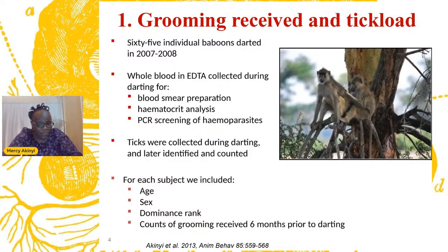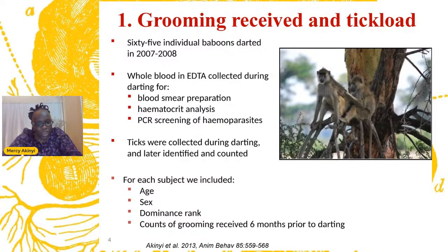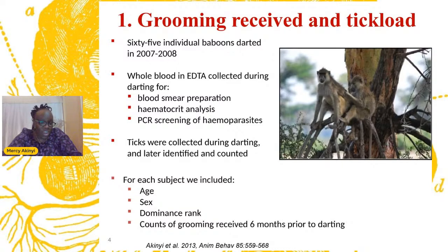These are individuals from a long-term individual-based monitoring program spanning many decades, with fine-grained data on life history events such as birth, maturation, migration, death, social interactions, and biological samples including blood and stool. For the first study looking at grooming received and tick load, we darted 65 baboons, got blood, made blood smear preparations, did hematocrit analysis, and did PCR screening for different hemoparasites. We also collected ticks, identified them, and counted them — ticks from each animal were preserved in ethanol. Demographic data including age, sex, dominance rank, and grooming counts from six months prior to darting were all available in our dataset.